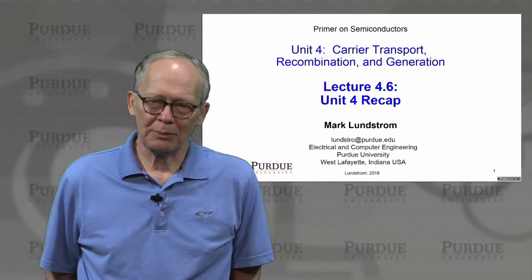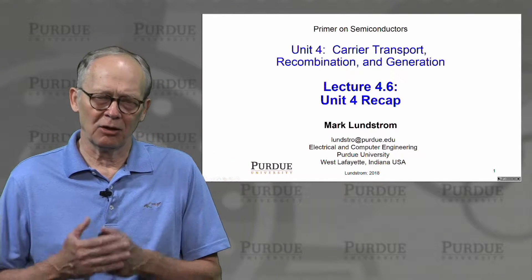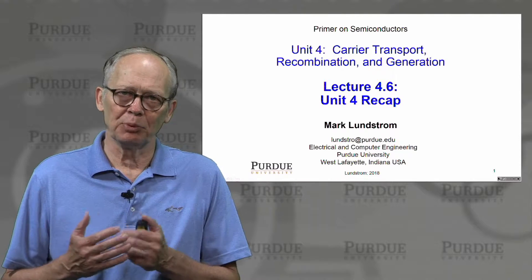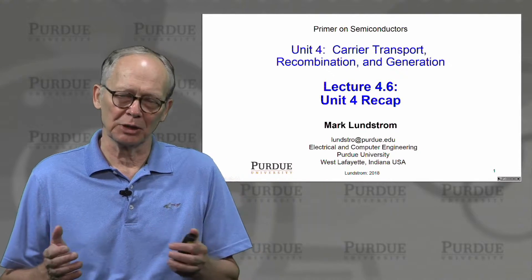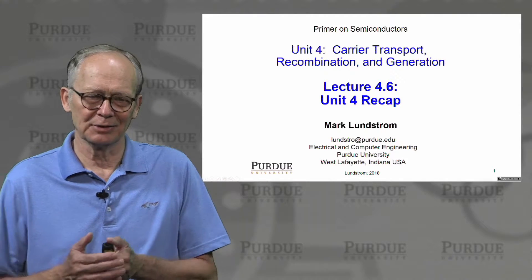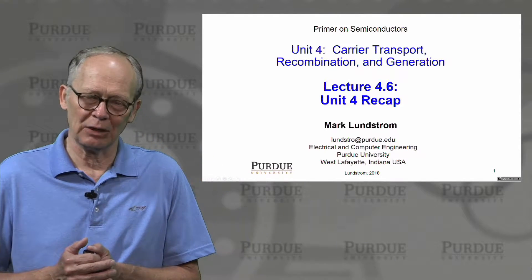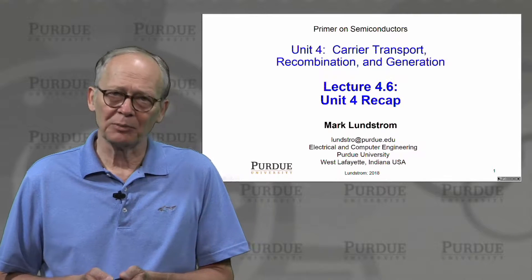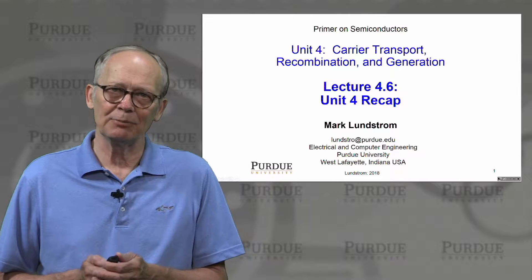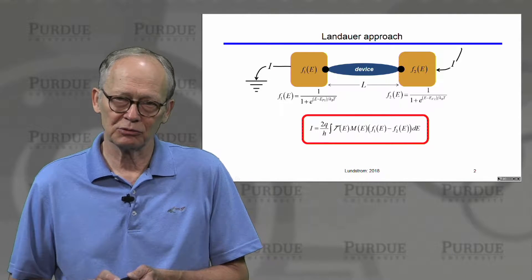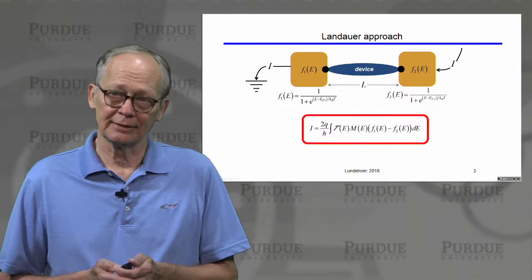It's time to wrap up Unit 4. Unit 4 has been all about processes that are important when semiconductor devices operate out of equilibrium — and of course, that's the only useful way to operate them. Let me summarize in this brief recap some of the key points that we discussed and that you should try to understand thoroughly as we move on to Unit 5.